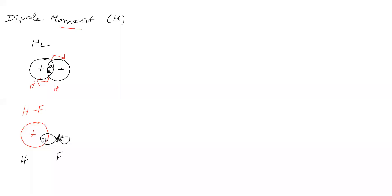Now the fluorine nucleus has a certain tendency to pull the bonding electron cloud towards itself. That tendency is called electronegativity. The electronegativity of fluorine is 4. The hydrogen nucleus also has some tendency to pull the bonding electron cloud — that electronegativity of hydrogen is 2.1. Since the electronegativity of fluorine is higher than that of hydrogen, fluorine pulls the bonding electron cloud towards itself more than hydrogen does.